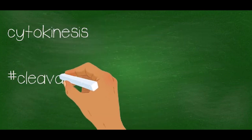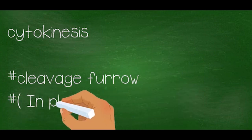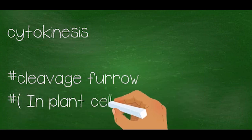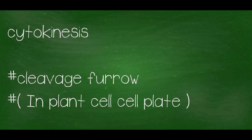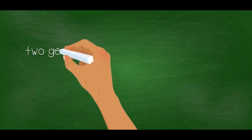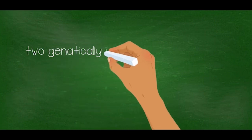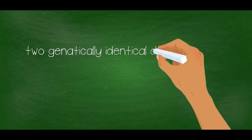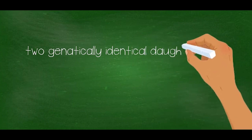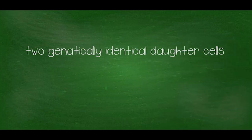Cytokinesis: a cleavage furrow is created from the equatorial plane of the cell and it pinches the two daughter nuclei into two separate cytoplasms. Now there are two genetically identical cells, and they are suitable to replace damaged or old cells.